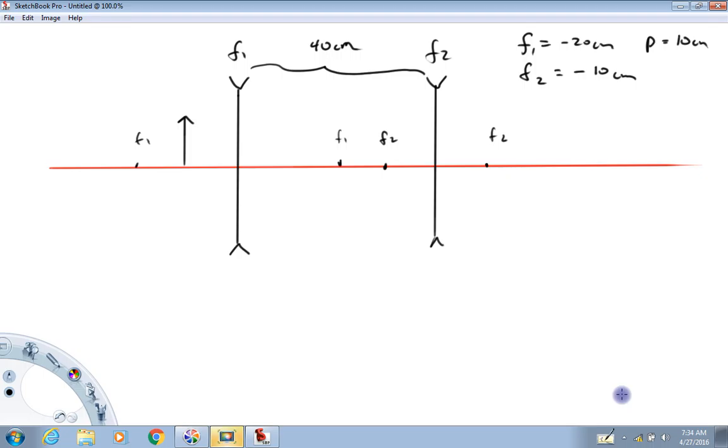I gave my class a vote on lens types and they voted on double diverging. We're going to assume the first lens has a focal length of minus 20 centimeters, the second lens has a focal length of minus 10 centimeters. We have an object sitting in front at the 10 centimeter position. P would still be positive because that's a real object, and we're going to work through this to figure out where the final image is, whether it's real or virtual, and what the final magnification is.